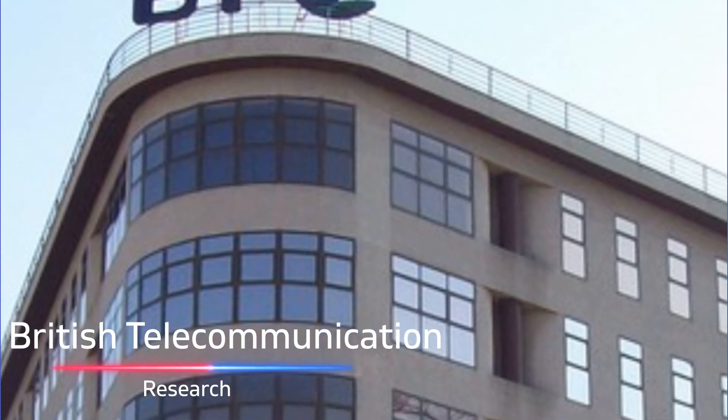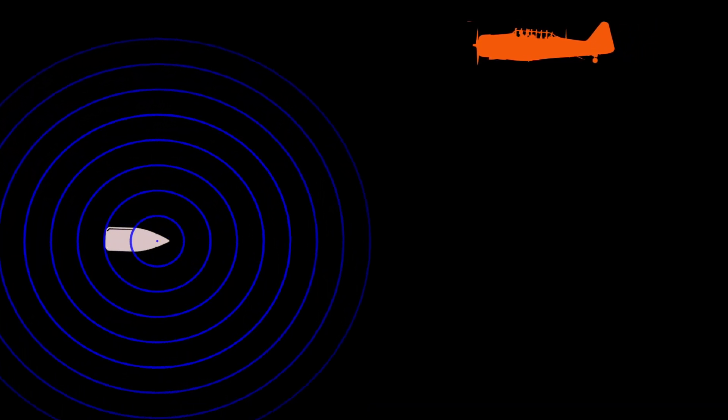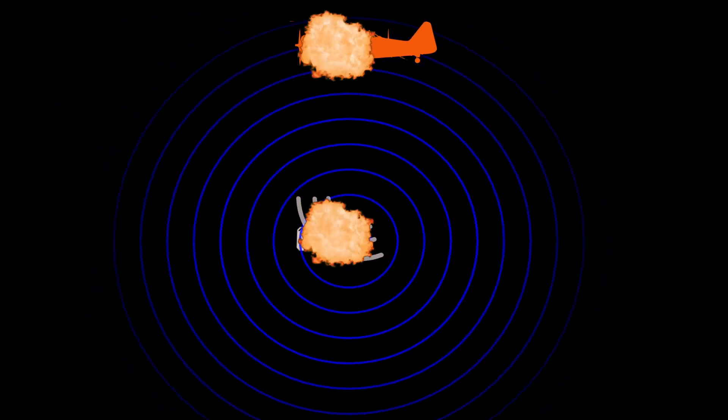By 1940, British military researchers at the Telecommunication Research Establishment conceived the idea of a proximity fuse. The proximity fuse worked by sending out radio waves and then measuring the time it takes for those waves to bounce back, allowing it to detonate at a set distance from the object.